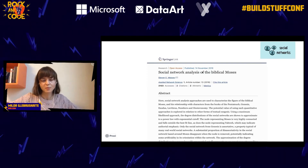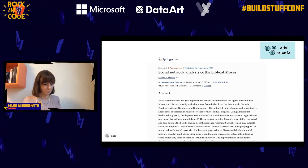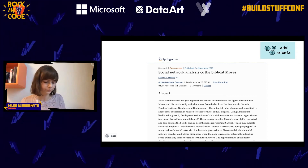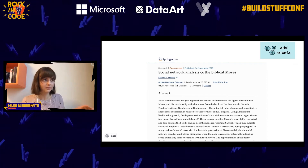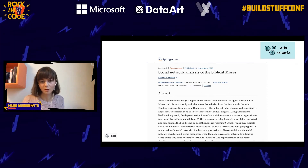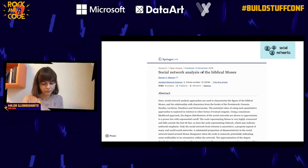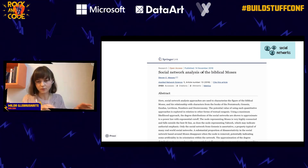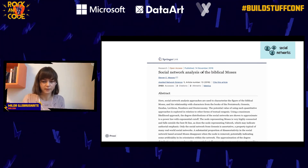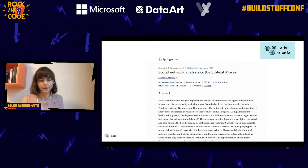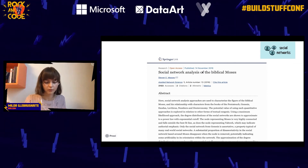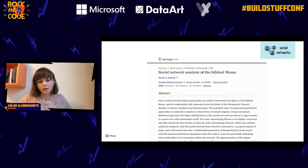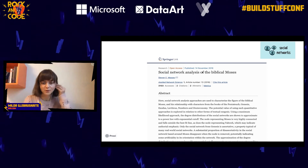This is very off-topic, but I found this paper fascinating. There's a debate about whether the biblical Moses was a real person or a metaphorical one. Scientists compared the social network of Moses — his contacts with other people in the Old Testament — to social networks of people known to be real, using graph matching algorithms to determine whether it's possible to have the social network described in the biblical books. The results were actually inconclusive.